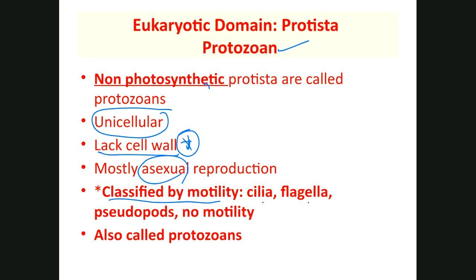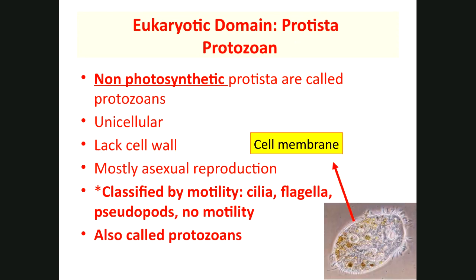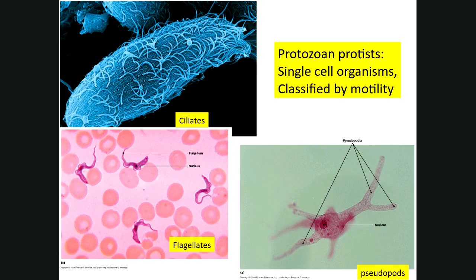Some protozoans have no motility, but those non-motile ones are motile at some point in their life cycle. Examples: paramecium has cilia, some have flagella, and amoeba uses pseudopods.